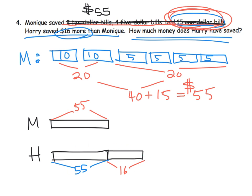The question is, how much did Harry save altogether? So the question mark is right here. So that's addition. That's just $55 plus $16, and that's going to give us the answer for Harry.